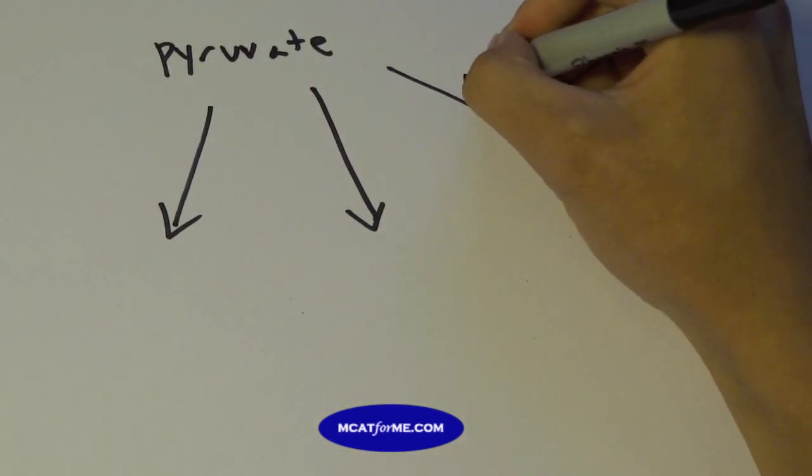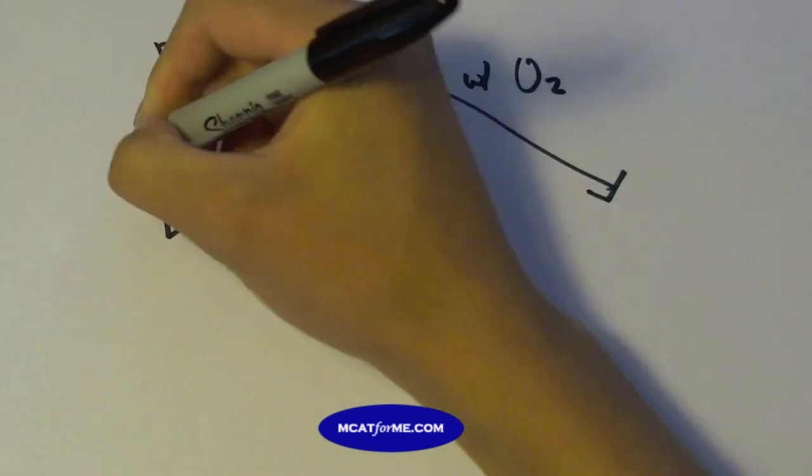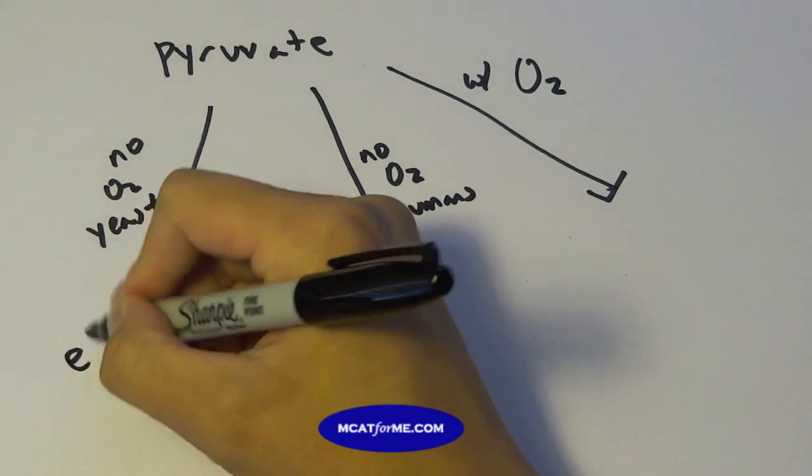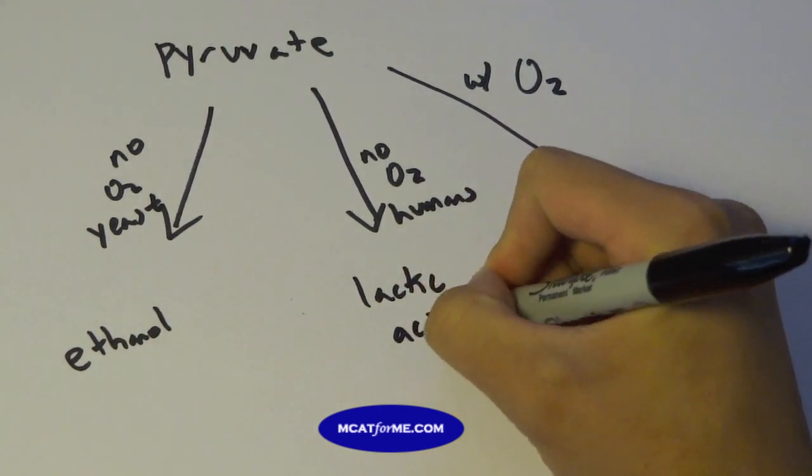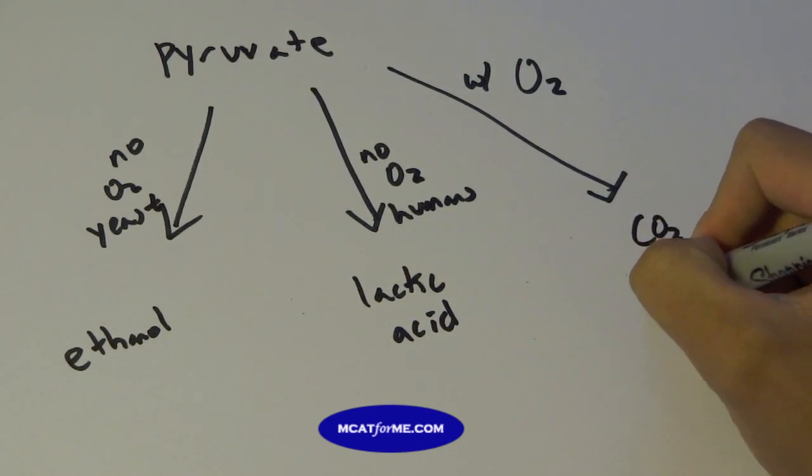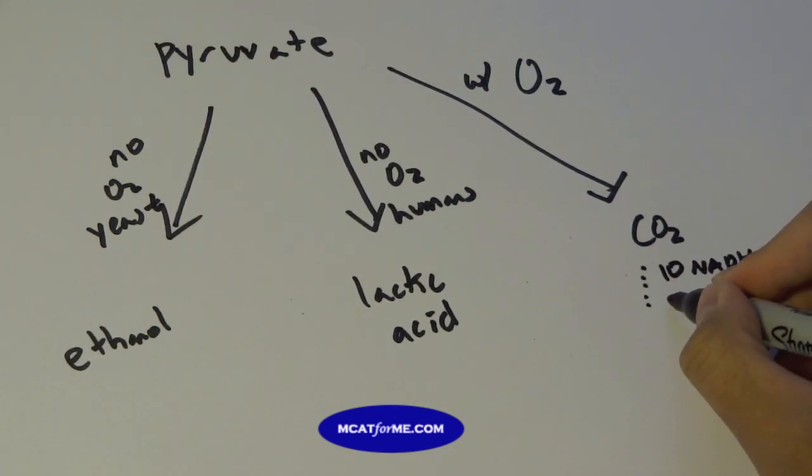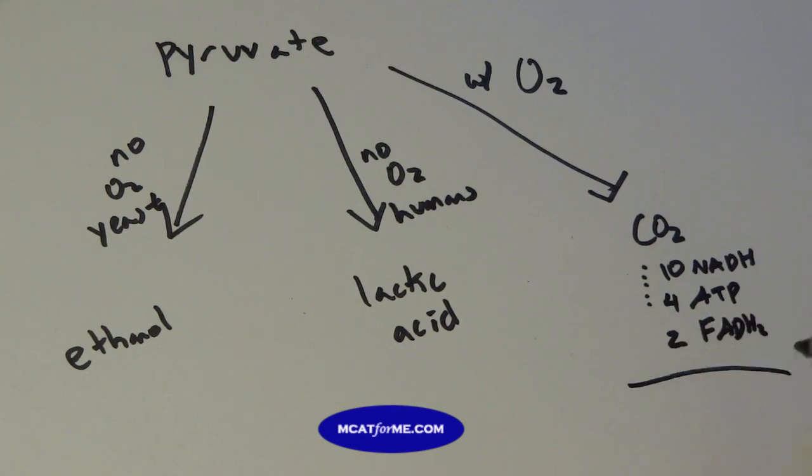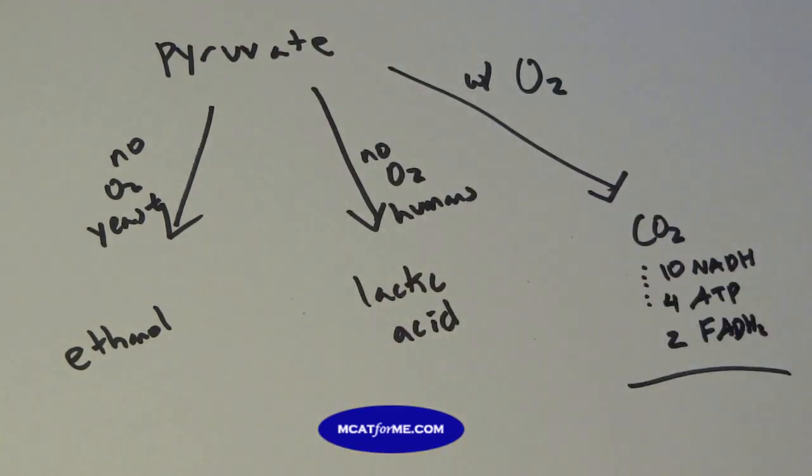So the first one is with oxygen. The second one is no oxygen, and we're going to talk about in humans. No oxygen, and this is going to be in like, for example, yeast. So pyruvate can go all the way to ethanol. Pyruvate can also go to lactic acid, and that's found in our muscles. With this, we'll show what exactly it goes down to, but the end product is CO2, but it also has a bunch of other things, namely 10 NADH, 4 ATP, and 2 FADH2 as a total. And so this will give you something we'll see later. But for now, we'll just leave it like this. But for ethanol and lactic acid, let's talk about that for a minute.